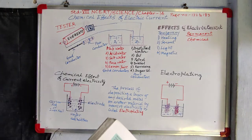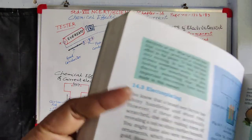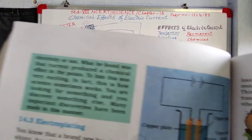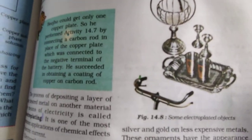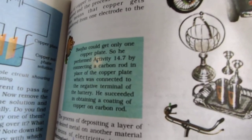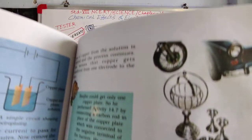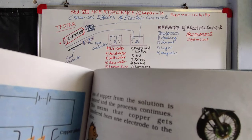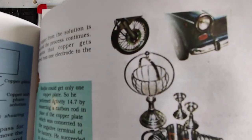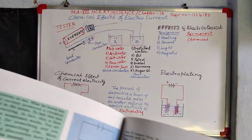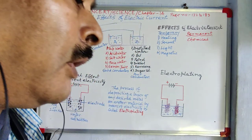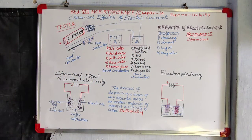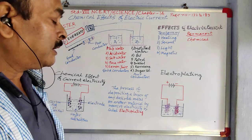This is the electroplating portion on page number 179. This is the diagram of electroplating, and these are the objects where electroplating is done — handle of the cycle and the rim of the wheel — and many other objects are done to give a shine or to protect from rusting. Electroplating is done.